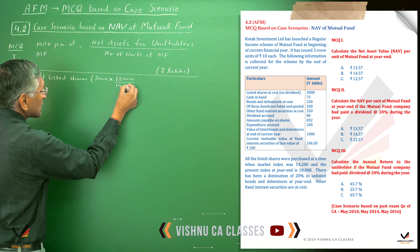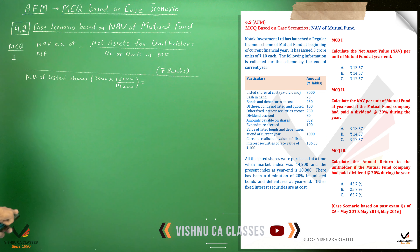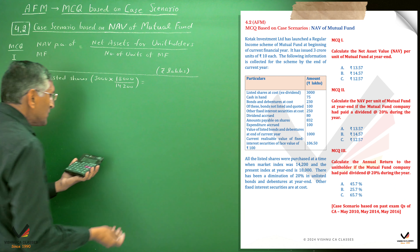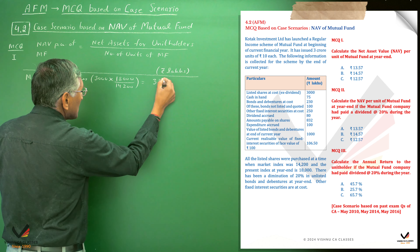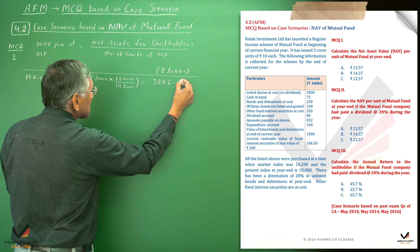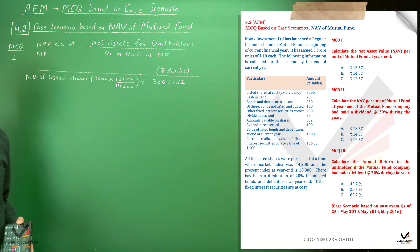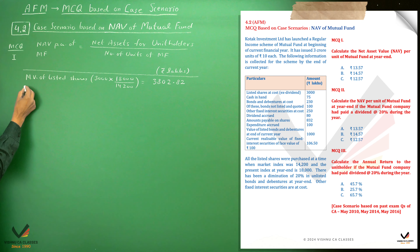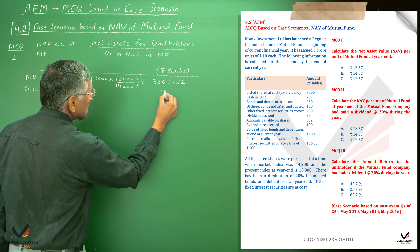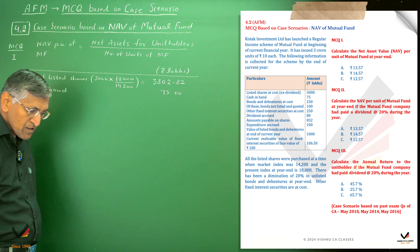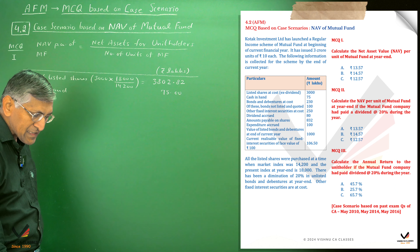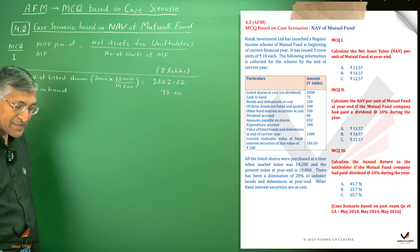So the market value of listed shares = 3,000 × 18,000 / 14,200, which equals 3,000 × 180 / 142 = 3,802.80 lakhs. Cash in hand is 75 lakhs. For unlisted bonds, the cost is 100 lakhs.